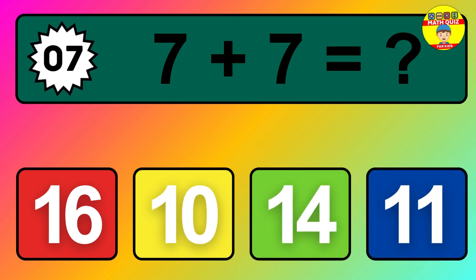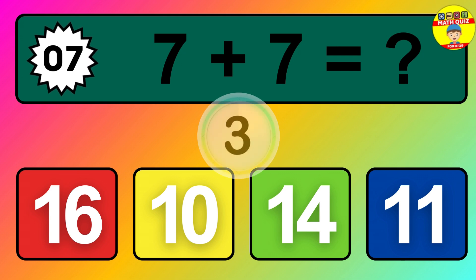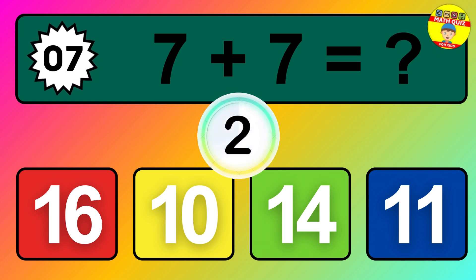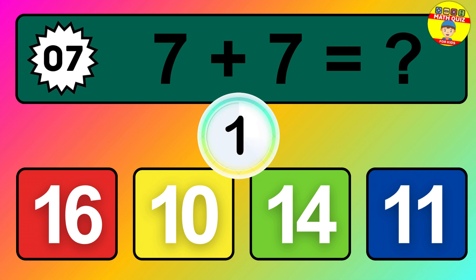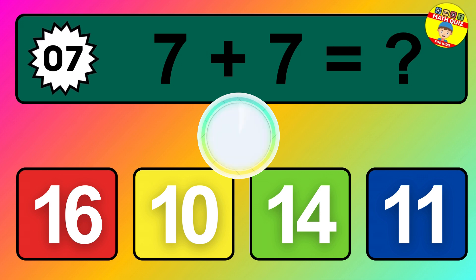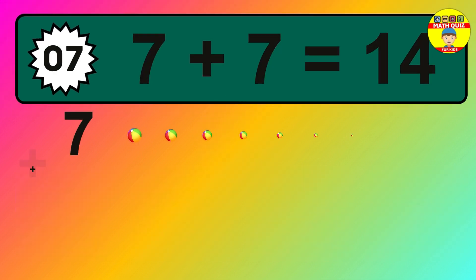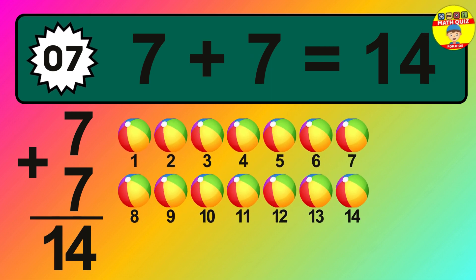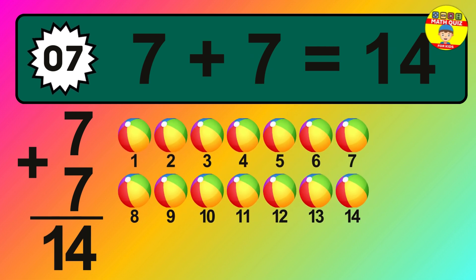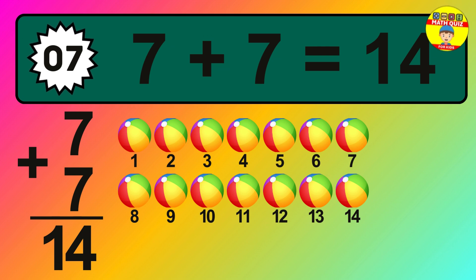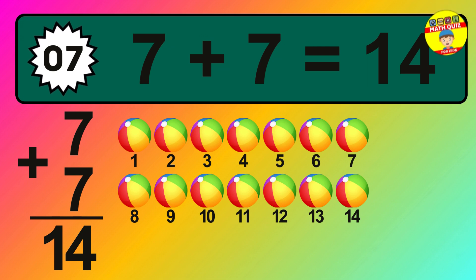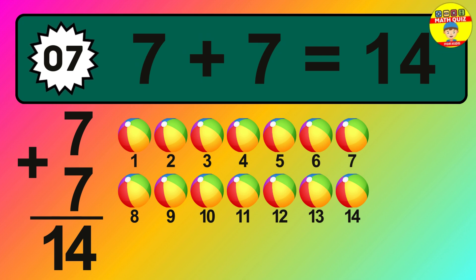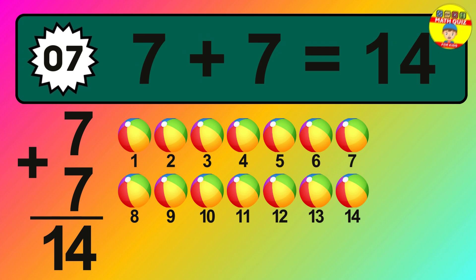Question 7. 7 plus 7 equals what? So the answer is 7 plus 7 is 14. Let's count it: 1, 2, 3, 4, 5, 6, 7, 8, 9, 10, 11, 12, 13, 14.